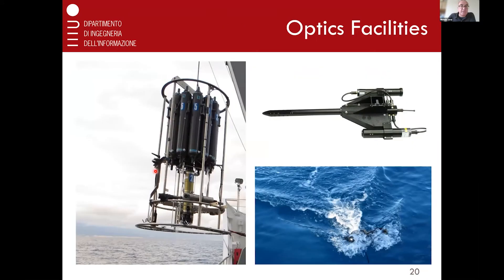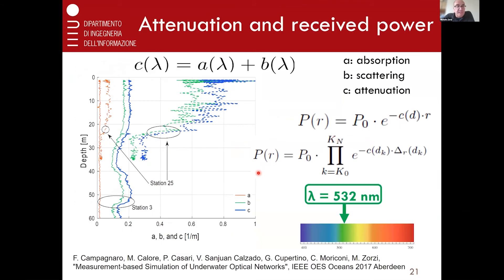These are pictures from that field campaign, including the devices used — which are actually quite big in size — to measure characteristics of the water, such as the chemical properties as well as light levels at different depths. As a function of depth, you measure these attenuation parameters. Typically in deep water things are good because you don't have disturbances, and you have quite stable behavior, whereas closer to the surface you may have organisms floating that will interfere with light propagation and provide a much higher value for the attenuation coefficient.